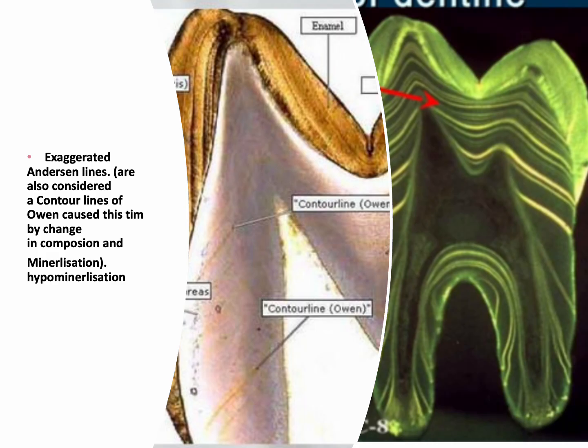Sometimes the Anderson lines have a problem in calcification — they become hypomineralized and look very distinctive from other Anderson lines in the tissue. When this happens, these lines are also named contour lines of Owen. So contour lines of Owen can be seen as exaggerated Anderson lines, or as a line showing a change in the direction of tubules in the secondary curvatures or between primary and secondary dentine.